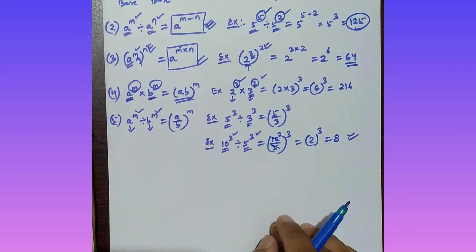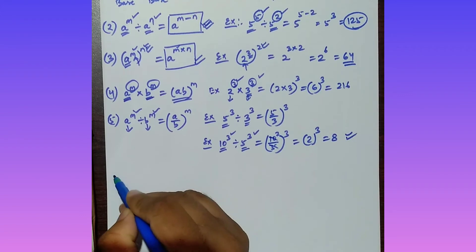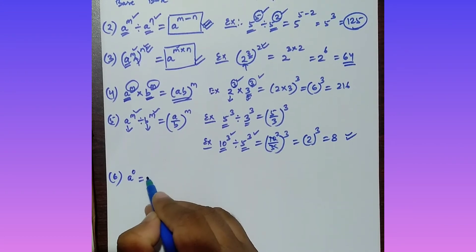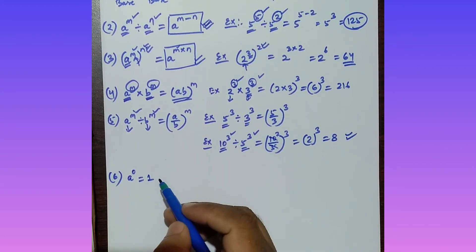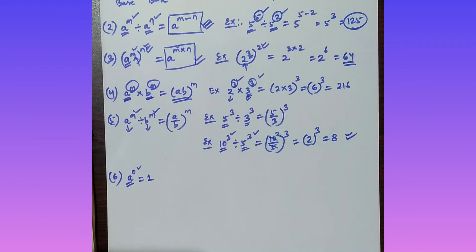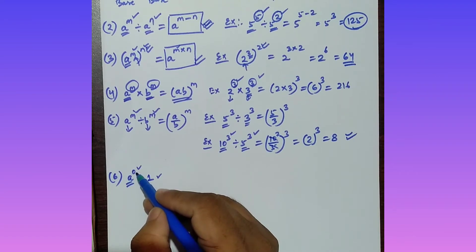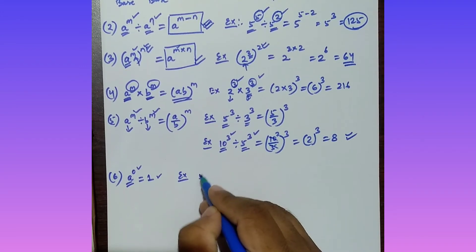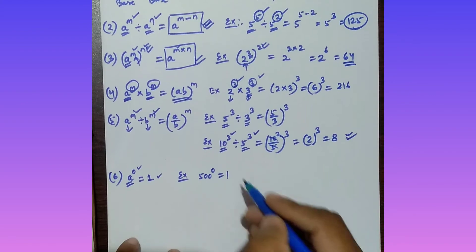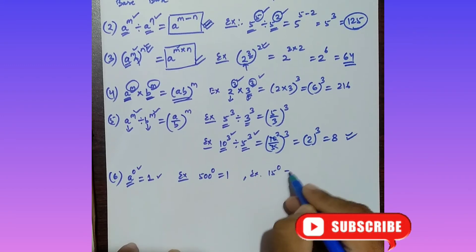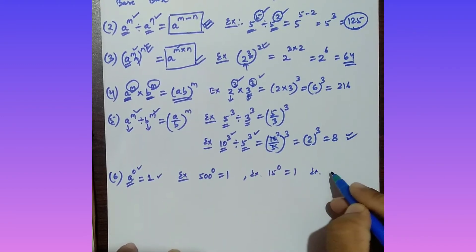The sixth property: a to the power 0 equals 1. Whatever the base may be, if the power (exponent) is zero, the answer is always 1. For example, 500 to the power 0 equals 1, and 15 to the power 0 also equals 1.